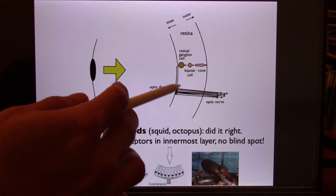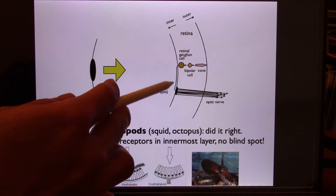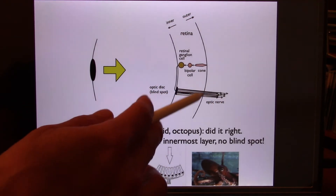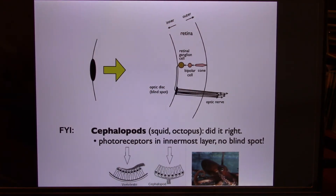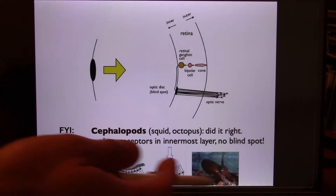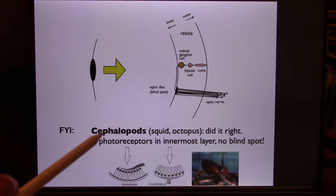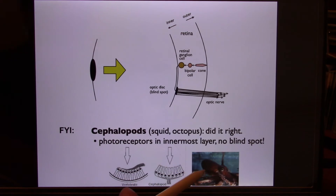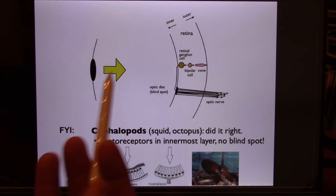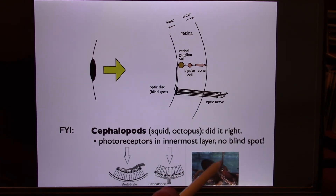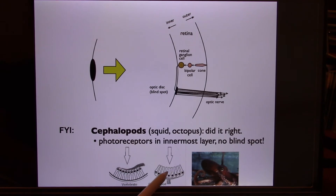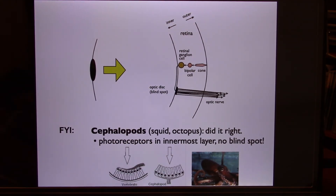Cones give you color vision and the sharpest vision. Looking at the human retina: we have ganglion cells, bipolar cells, and cones, plus a blind spot where all axons converge to exit as the optic nerve. With no photoreceptors there, you have a true blind spot. By comparison, octopus and squid have a better eye design — their photoreceptors face outward, so they have no blind spot. Thinking like an engineer, they actually have better eyes than we do.